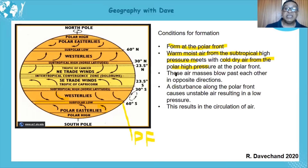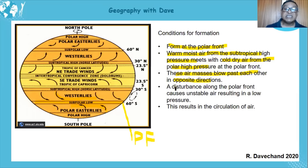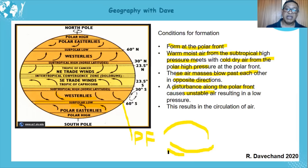These air masses flow in opposite directions on both sides of the polar front. A disturbance is then created along the polar front, which causes unstable air. There's a bend — a disturbance — and the cold air moves in one direction while the warm air moves in another.